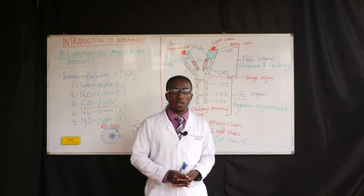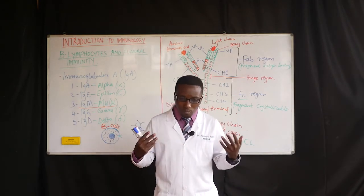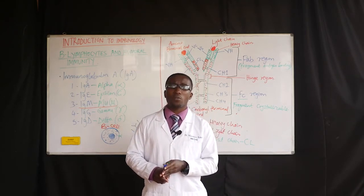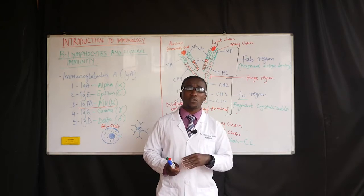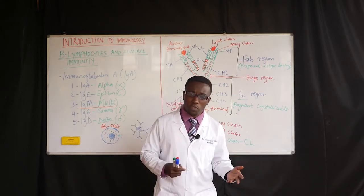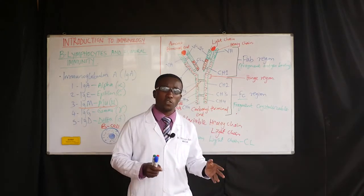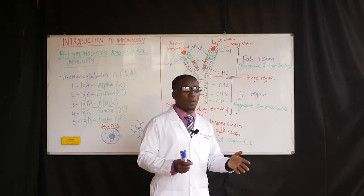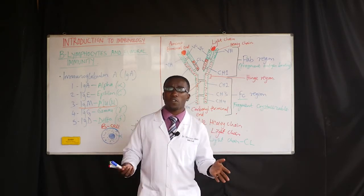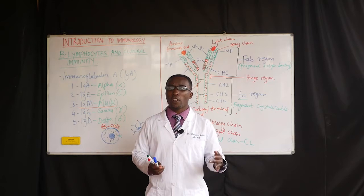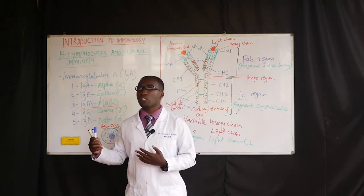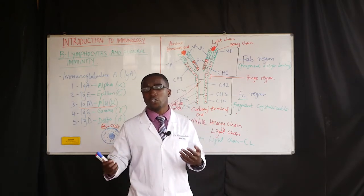The reason we began with IgM is that it is the first antibody produced in response to any antigenic challenge or infection — IgM is always the first. When it comes to IgG, it comes in later and is usually associated with the chronicity of some conditions.